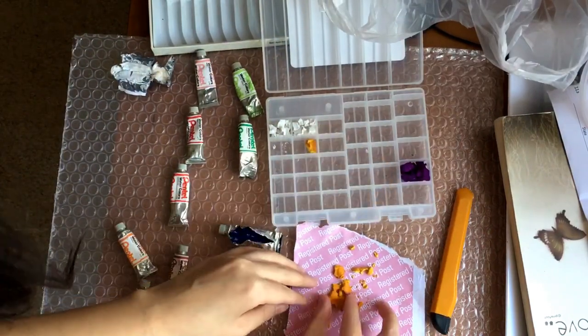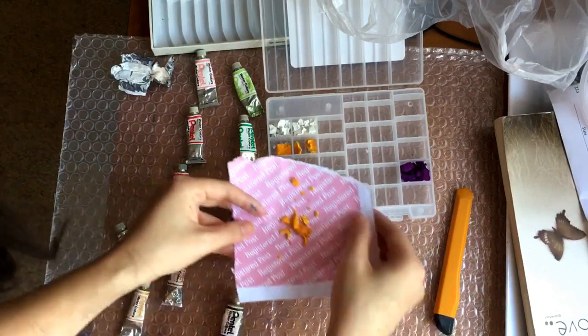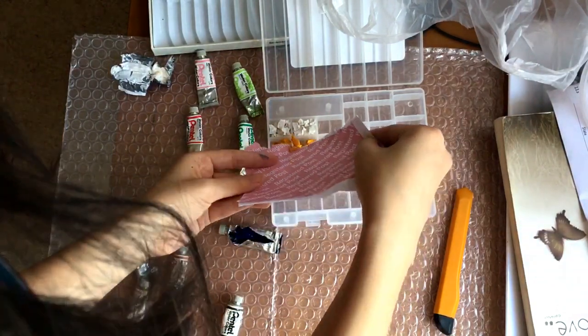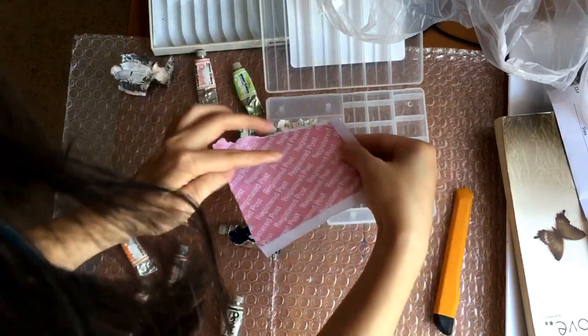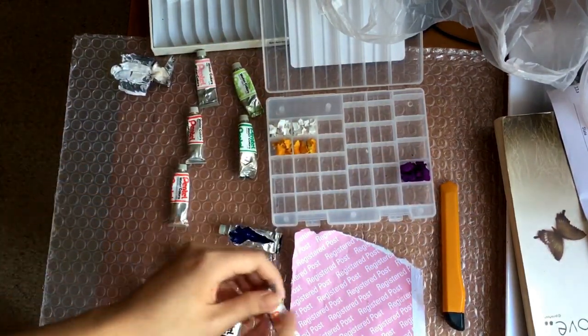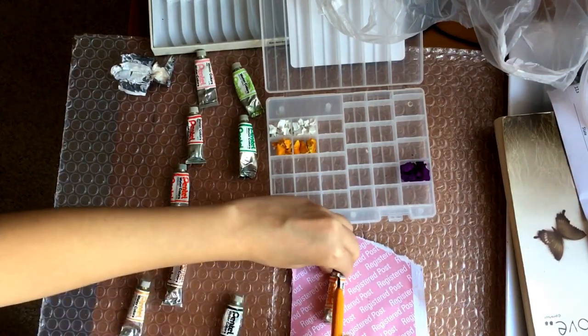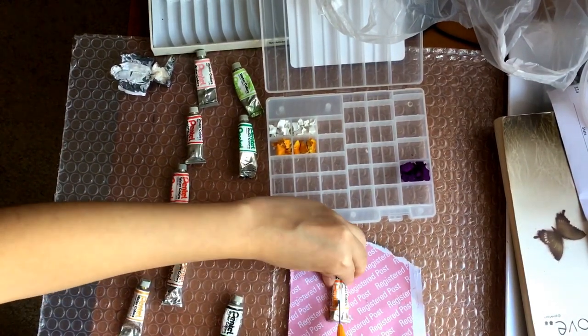The steps are: first, use a cutter to cut out the dried paint, then move it onto a piece of paper, and from the paper transfer it to the compartment I want it in.